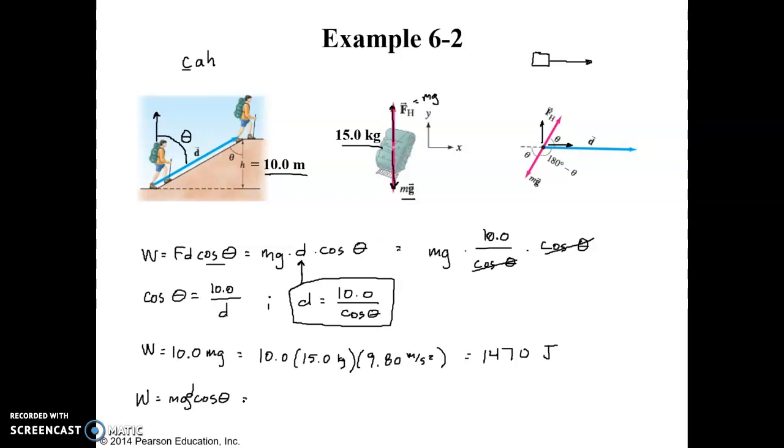So this is now going to become mg 10.0 over cosine of theta times cosine of theta. And those will cancel out.